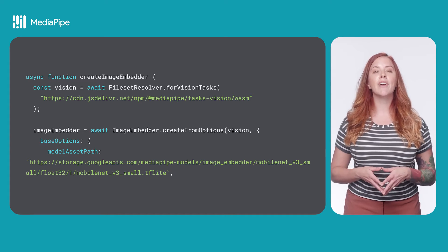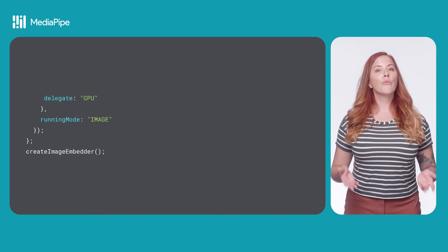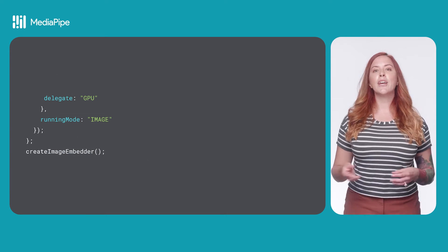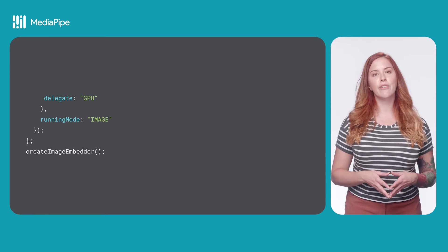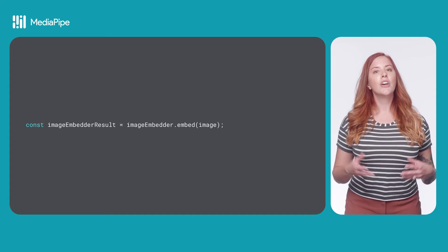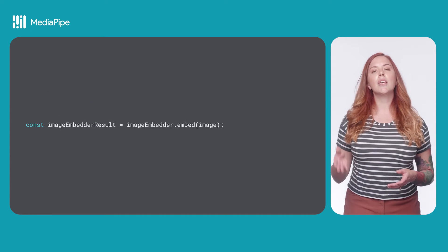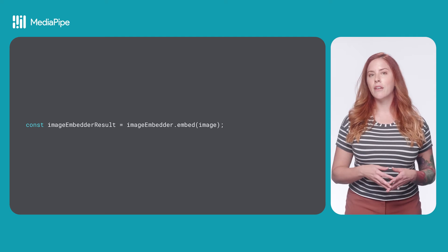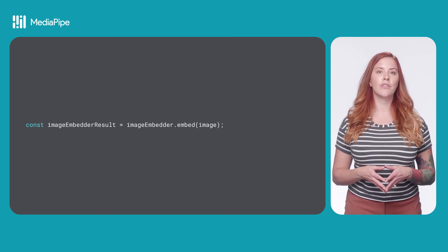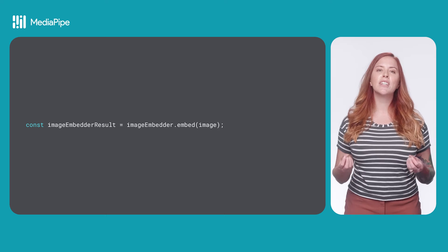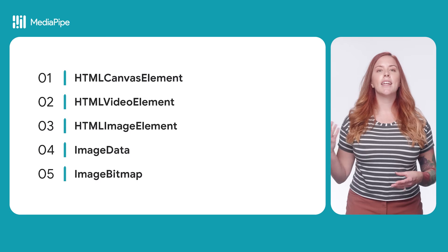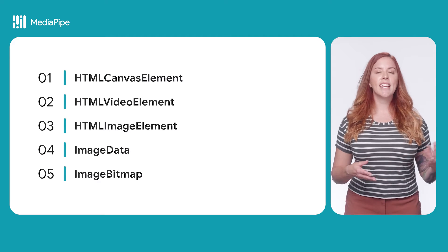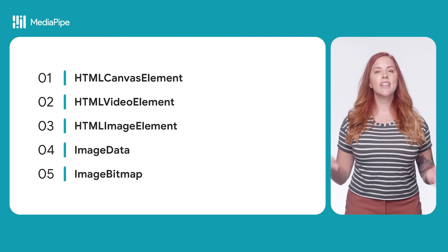You can also provide optional parameters. Running mode is either image or video depending on whether you're running embedding on images or videos — image is the default value. To run image embedding on an image, use the image embedder dot embed method, passing the image source. This function is synchronous, which is good to keep in mind when designing your UI. The image source can be an HTML canvas element, HTML video element, HTML image element, image data, or image bitmap.